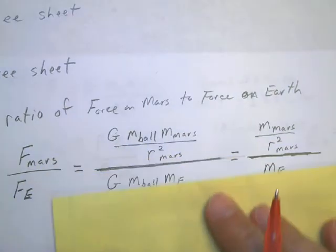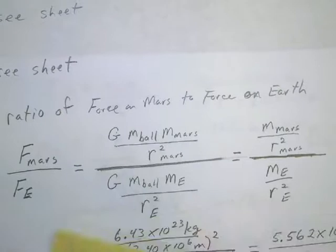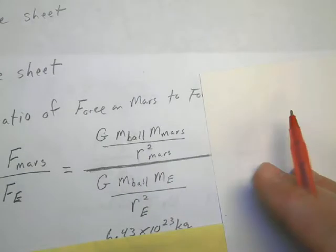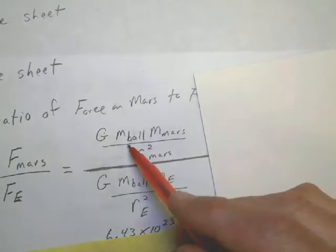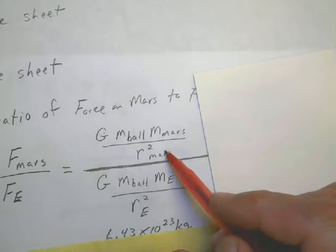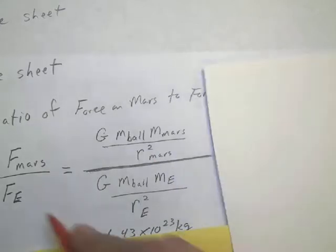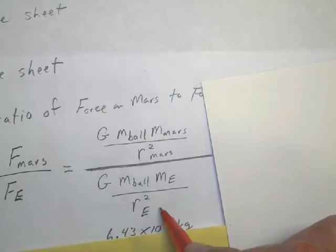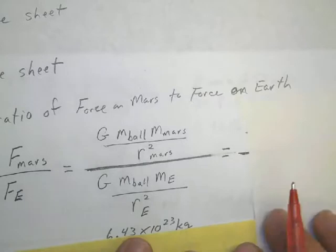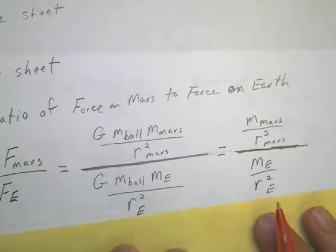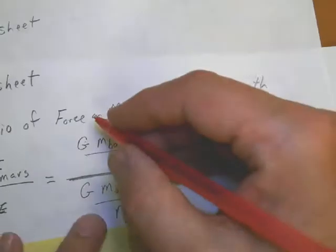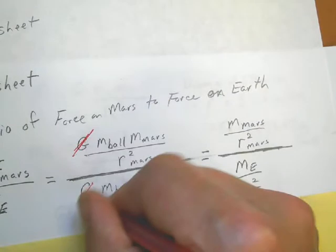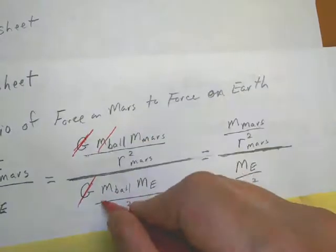Looking at this equation, I just set it up as a ratio. The force on Mars would be equal to the gravitational constant times the mass of the ball times the mass of Mars divided by the radius squared of Mars. Then the force of gravity on Earth would be equal to G times the mass of the ball times the mass of Earth divided by the radius squared of Earth. That reduces down because G is in the numerator and denominator, so those values cancel each other out. The ball is the same on Earth as it is on Mars, so you can get rid of those two. It reduces to the mass of Mars divided by the radius squared of Mars, all of that divided by the mass of Earth divided by the radius squared of Earth.